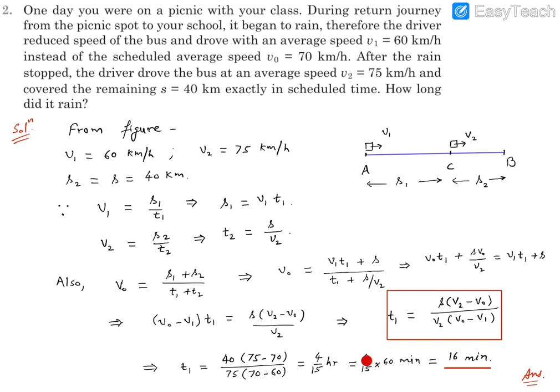so it will be 4 into 4, 16 minutes. So overall it will take 16 minutes for bus to go from A to C, that means up to 16 minutes there was raining and then after the bus was moving with a speed 75 km/h to reach B on scheduled time. So that's our final answer, thank you.